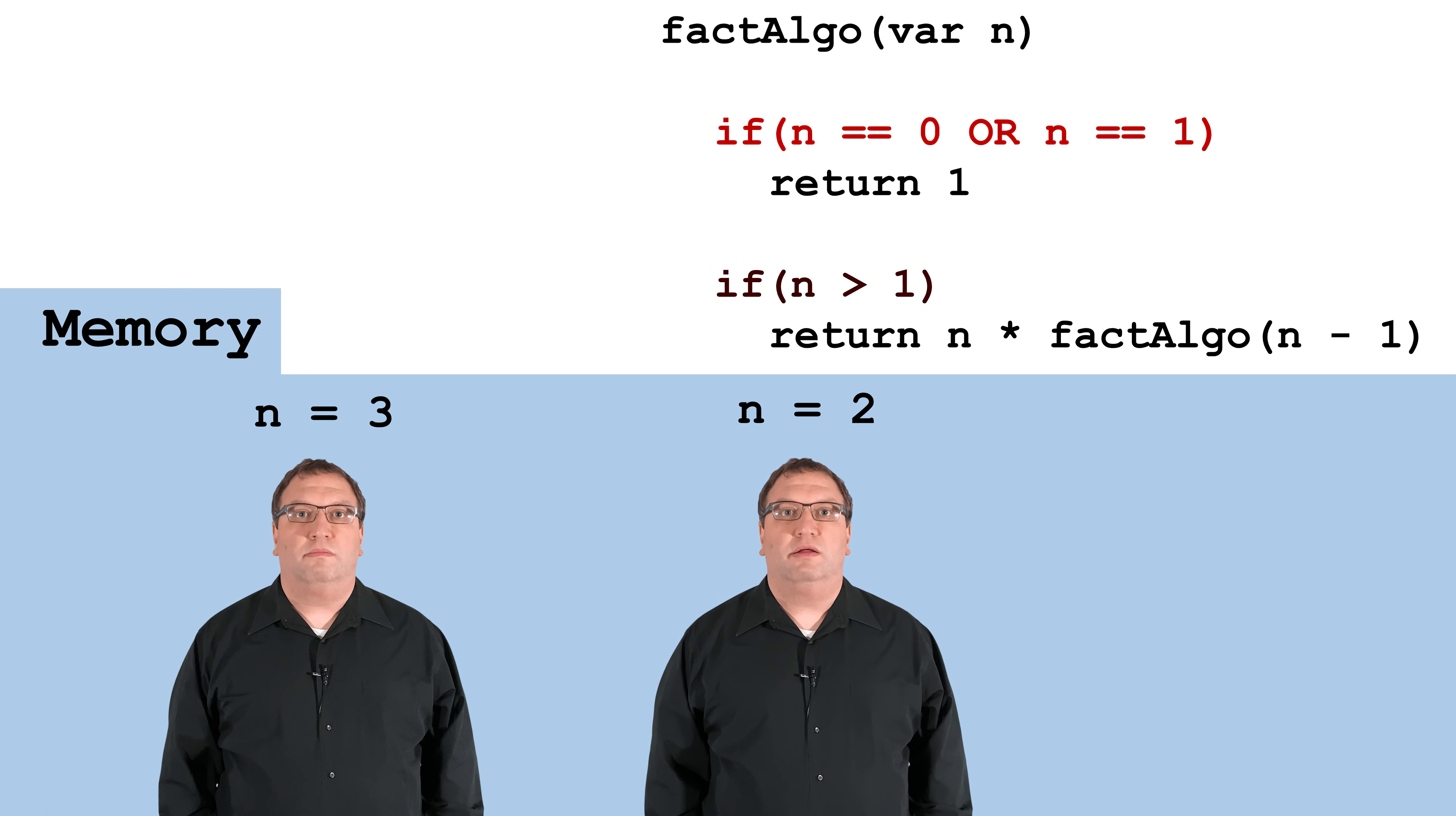Let's see what they gave me for n. n equals 2. Well, 2 isn't equal to 0, and isn't equal to 1, so I can move on.